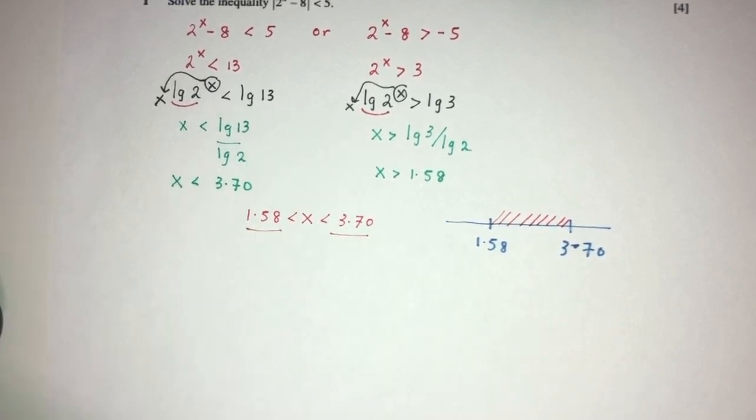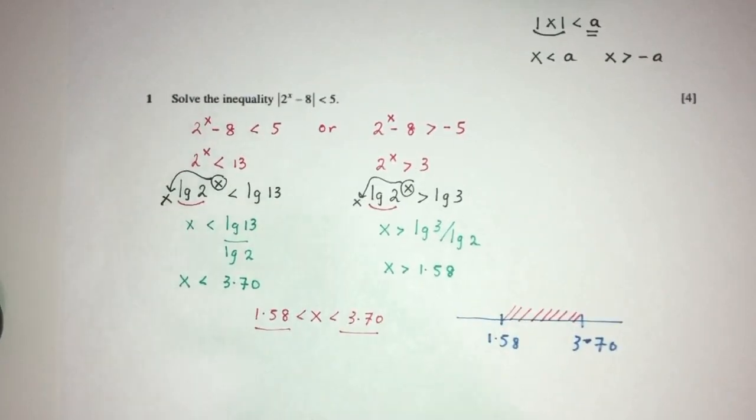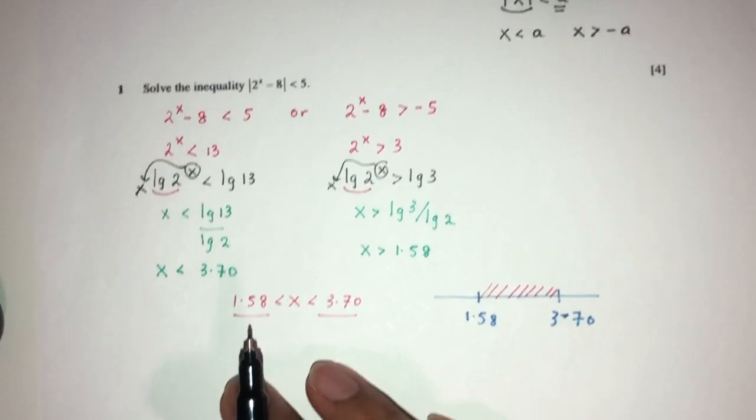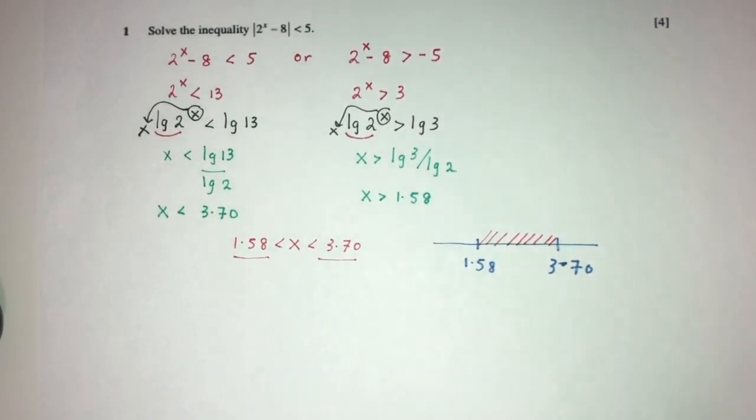And this is your answer for question number one. Again, if you want to square both sides, you can always do that. It is up to you. But here, in this case, this is much faster. And this is your question number one.